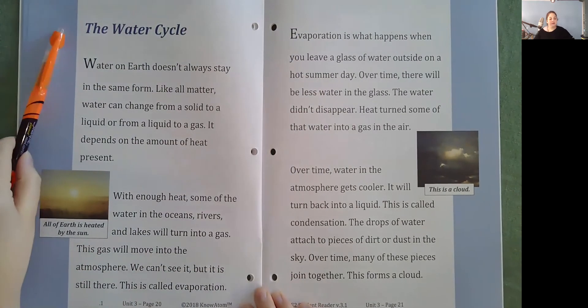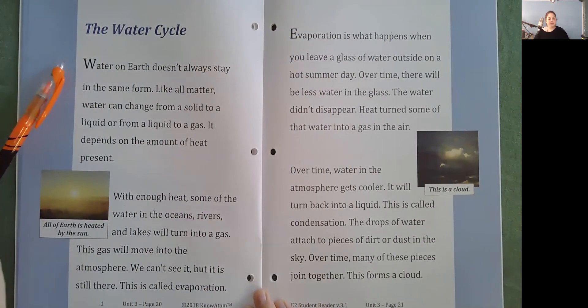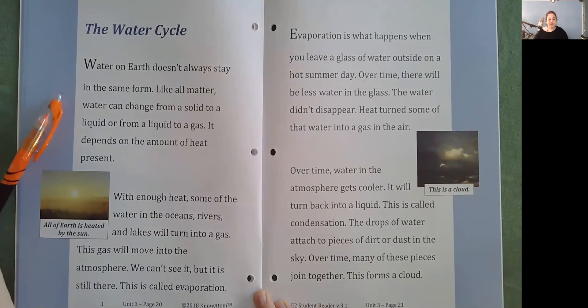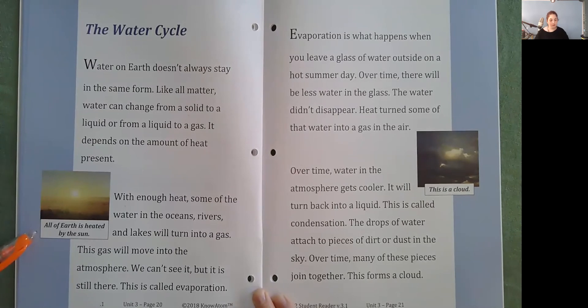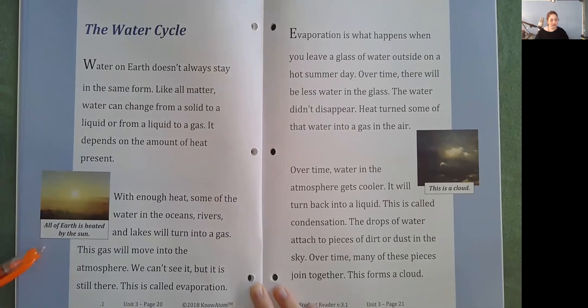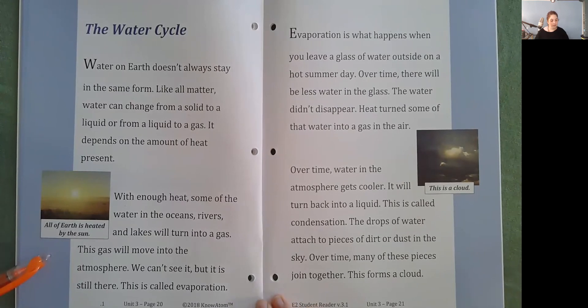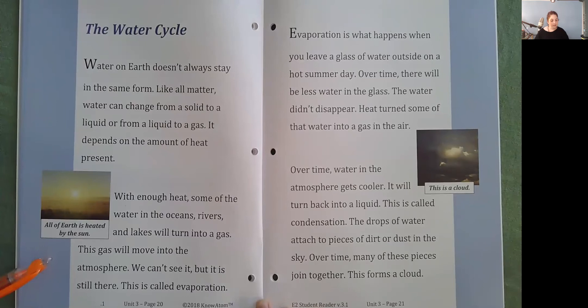The water cycle. Water on Earth doesn't always stay in the same form. Like all matter, water can change from a solid to a liquid or from a liquid to a gas. It depends on the amount of heat present. With enough heat, some of the water in the oceans, rivers, and lakes will turn into gas. This gas will move into the atmosphere. We can't see it, but it's still there. This is called evaporation.